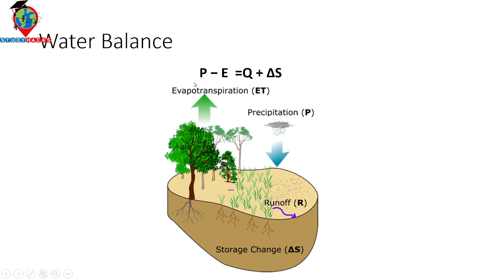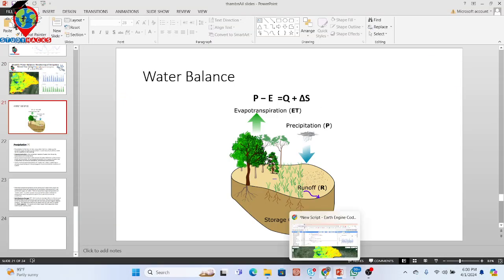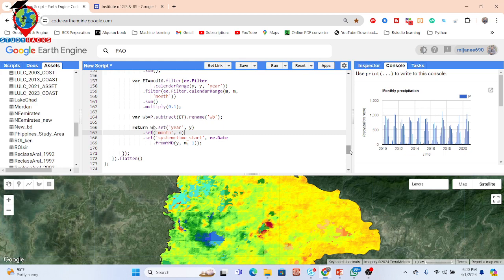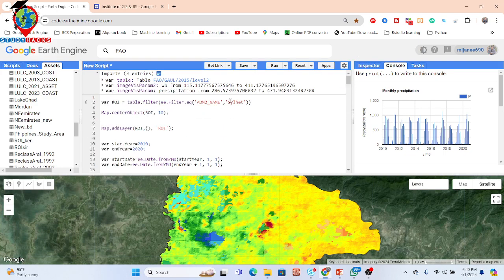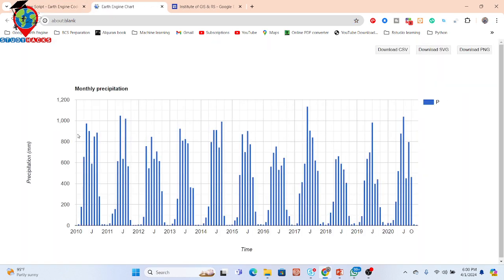For evapotranspiration, you can also use the appropriate dataset — I will show you each one in my code so you can understand all the ideas. The result shows monthly precipitation calculated and displayed as a chart, and we also calculate monthly evapotranspiration.